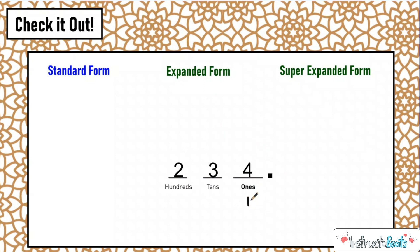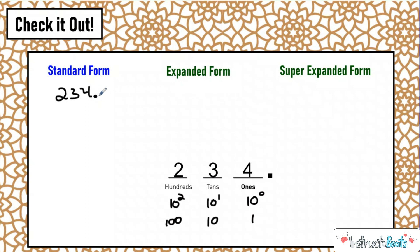It all goes back to understanding that our place value is based on powers of 10. So this would be the ones place, the tens place, and then the hundreds place because that's 10 times 10. So in standard form, this number would just be 234. We don't typically write the decimal unless there's a decimal number afterwards — if it's just a whole number, we don't write the decimal because we always know it's there. Now for our expanded form, we're going back to talking about how we got the value of each digit.